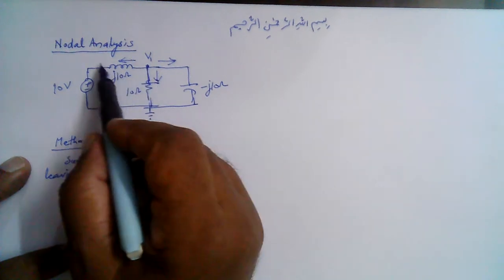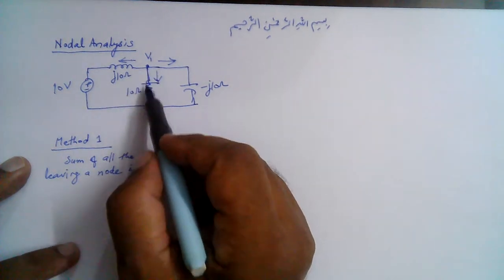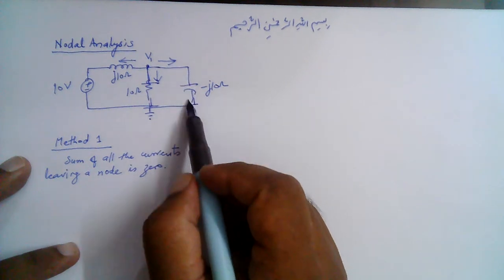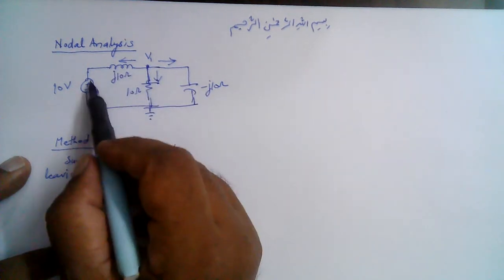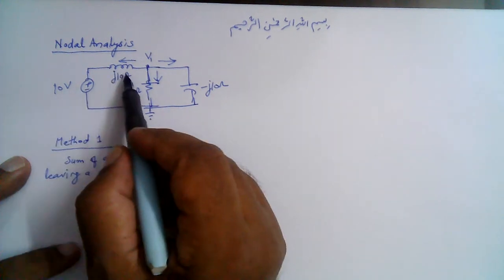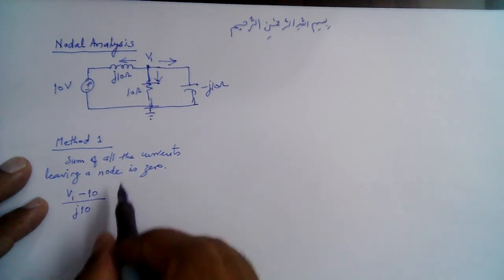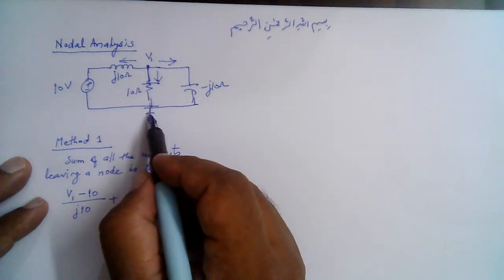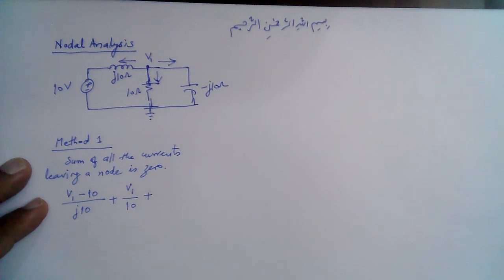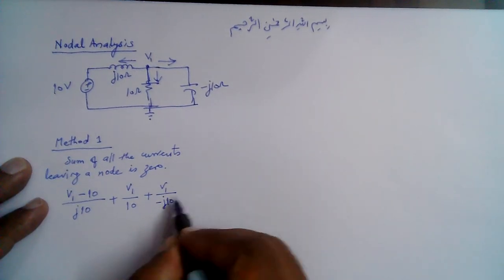For each branch, the current is the potential difference across the impedance divided by the impedance value. The potential difference across the inductor branch in this direction is V1 minus 10, so the current is (V1 − 10) / j10. The current through the resistor branch is V1 / 10, and through the capacitor branch is V1 / (−j10). Setting the sum equal to zero: (V1 − 10)/j10 + V1/10 + V1/(−j10) = 0.